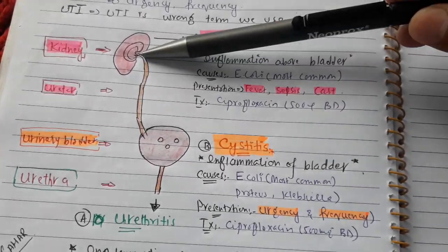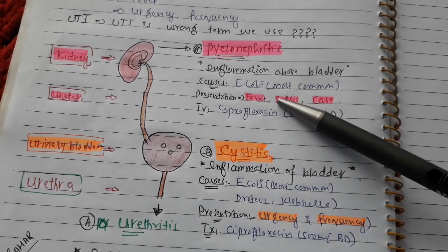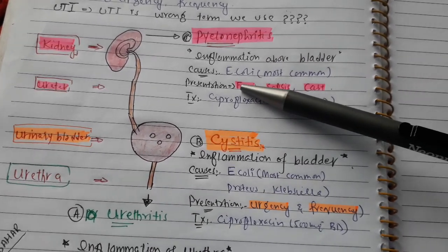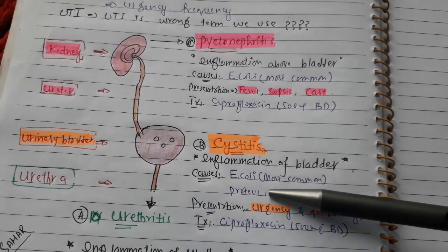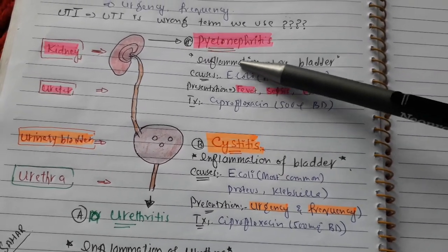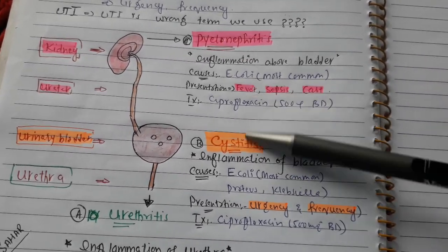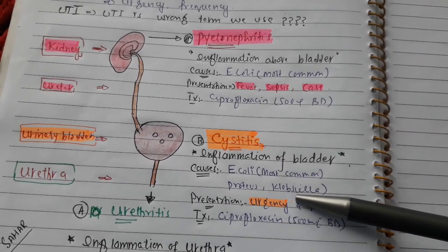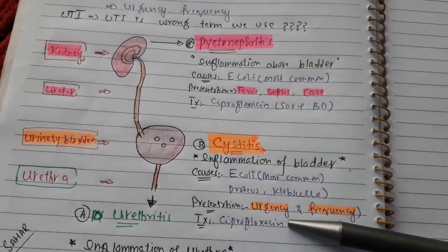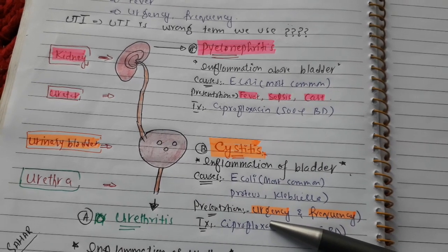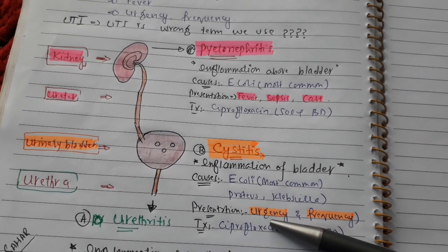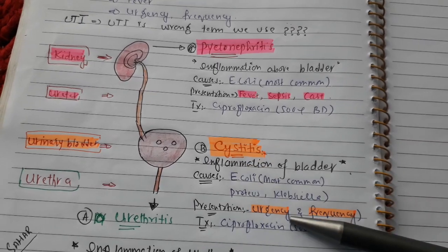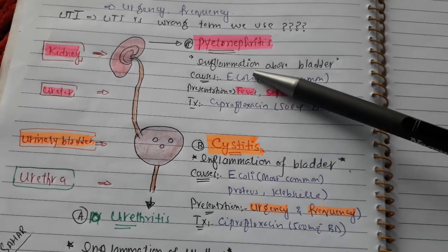Pyelonephritis is inflammation above the urinary bladder, involving the kidney. The most common causes for pyelonephritis and cystitis are the same — E. coli, Proteus, and Klebsiella — with E. coli being most common. The treatment is the same for both; only the patient presentation differs. In cystitis, the patient presents with urgency and frequency.